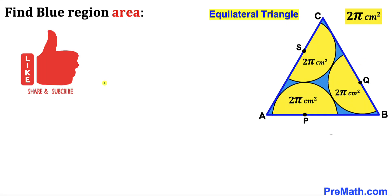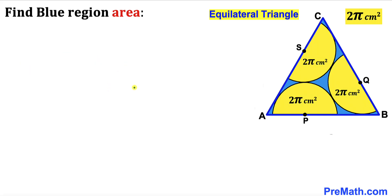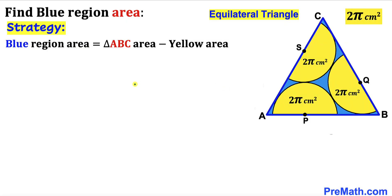Please don't forget to give a thumbs up and subscribe. Keep in mind that this figure may not be 100% true to scale. Here's our strategy: since we are interested in calculating the blue shaded region area inside equilateral triangle ABC, we can observe that the blue shaded region area equals the area of triangle ABC minus the total yellow area of the semicircles.